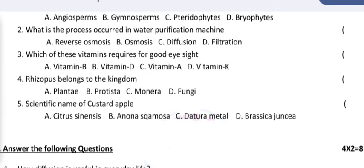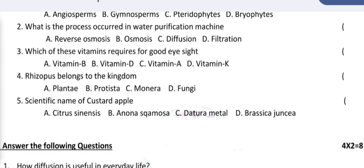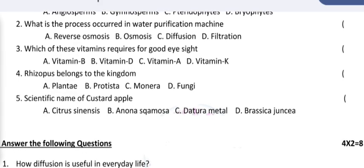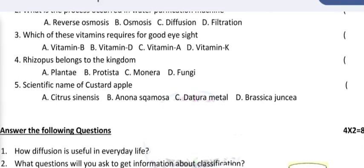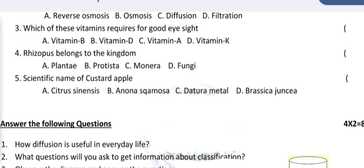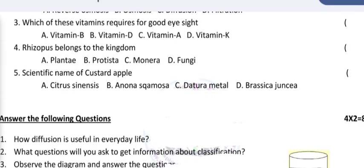Which of these vitamins require for good eyesight? A: vitamin B, B: vitamin D, C: vitamin A, D: vitamin K. The correct option you can select and write it in the space provided.